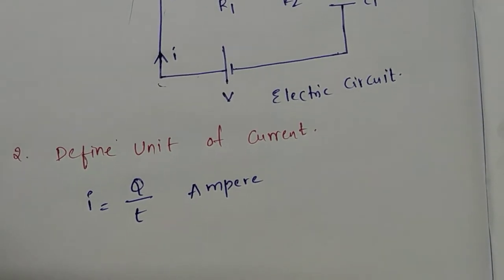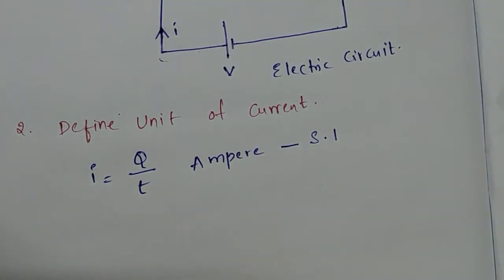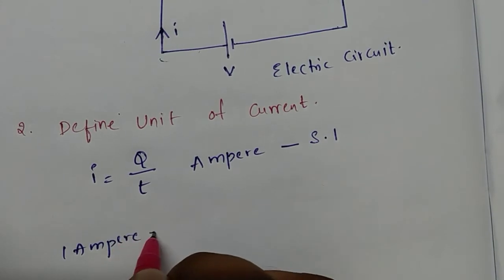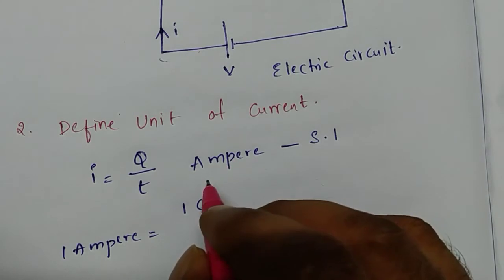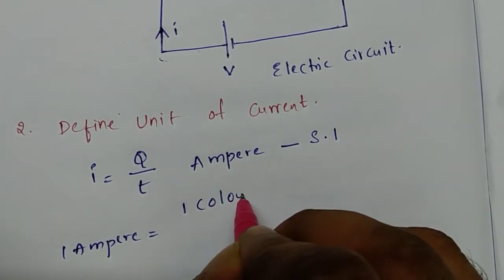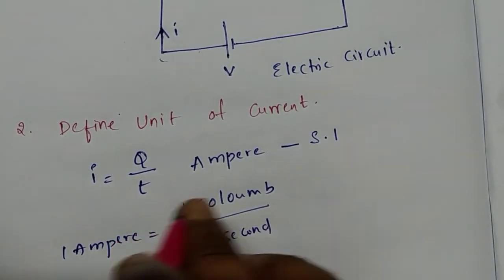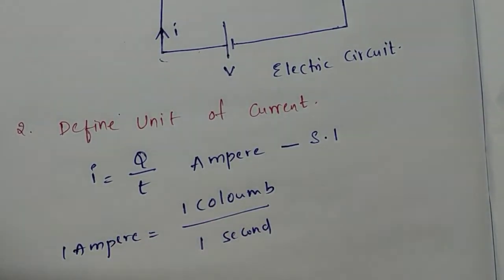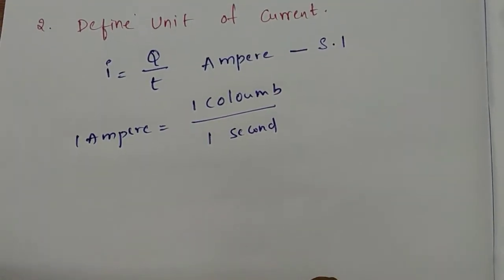What does 1 ampere mean? The unit of current is ampere. 1 ampere means 1 coulomb of charge per 1 second. So the flow of 1 coulomb of charge per 1 second gives 1 ampere. This is the unit of current.